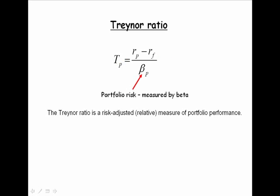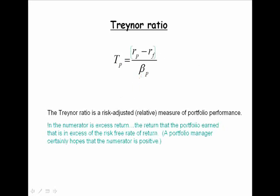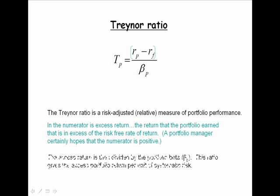The denominator has a different measure of risk. Portfolio risk in the Treynor measure is represented by the beta coefficient. So the numerator is excess return. Again, a portfolio manager hopes to have earned positive excess return.